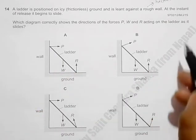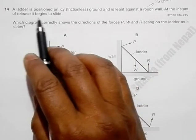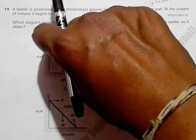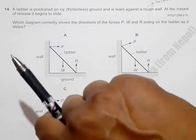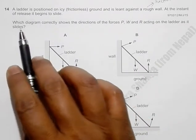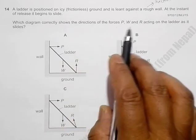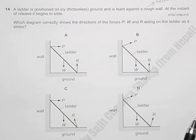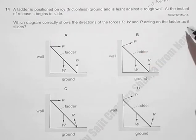At the instant of release it begins to slide, so the ladder will slide like this. We have to identify which diagram correctly shows the directions of the forces P, W, and R acting on the ladder as it slides. You have to find the direction of the forces when it is sliding.